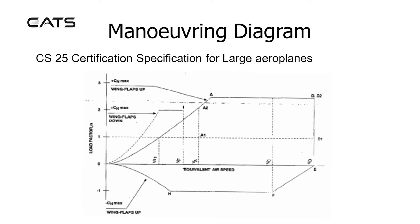The manoeuvring diagram. This is a certification specification for large aeroplanes. The manoeuvring diagram shows load factor versus airspeed and effectively is an envelope within which the aircraft can operate. On the horizontal axis, starting from a load factor of zero, can be seen VS1, VF, VA, VC and VD. At the 1g load factor, a line goes up to the wing flaps-up condition at point A on the envelope.